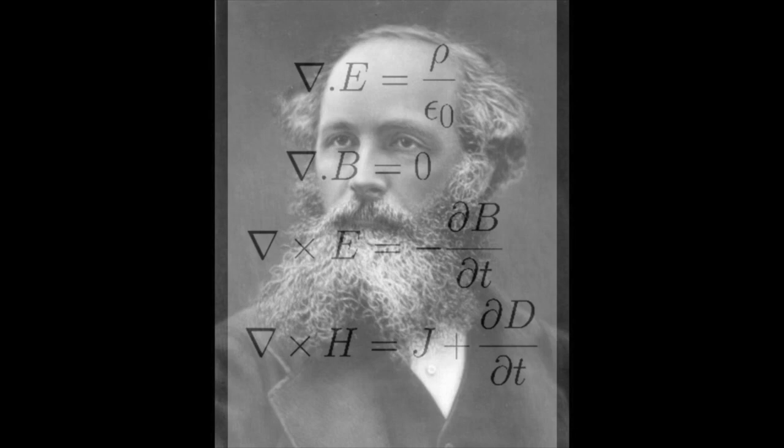These equations explain, for example, all the results of the pivotal experiments on electric currents and magnetic fields that Michael Faraday had carried out in the 1830s at the Royal Institution.